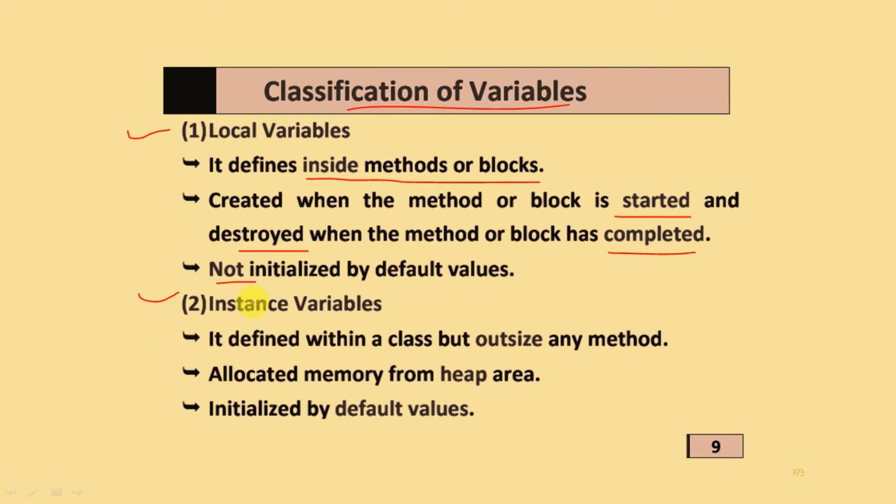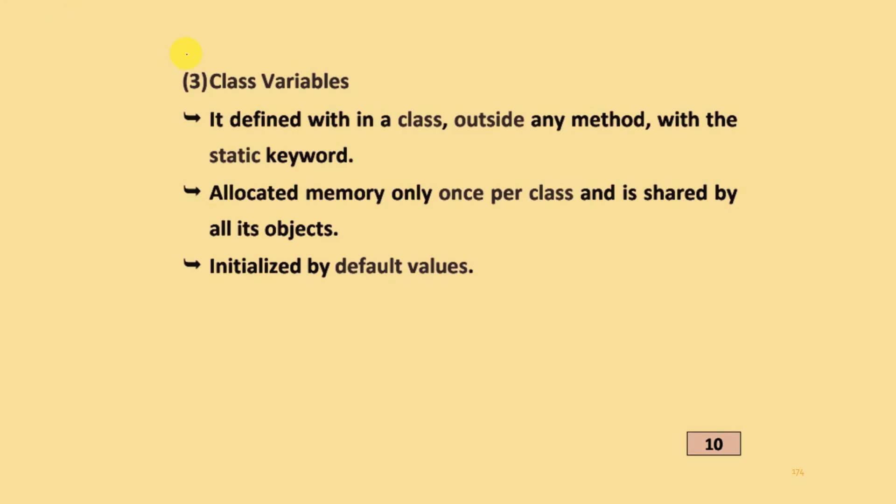Instance variables are defined within a class but outside any method, allocating memory from the heap area and initialized by default values. Class variables are defined with a class outside any method with the static keyword, allocating memory only once per class. They are shared by all objects and initialized by default values.